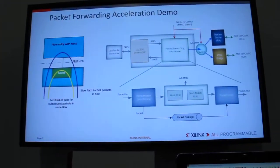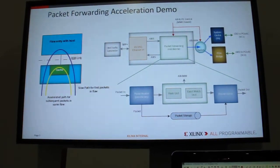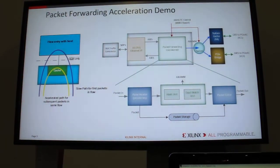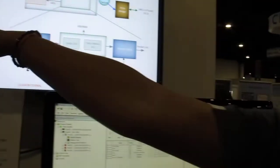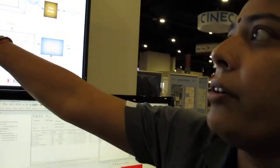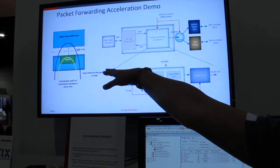In this particular demo, what we are demonstrating is packet forwarding — basically an L2 switching application acceleration using CCIX. If you see the diagram here, we basically have our forwarding rules for L2 switching which are residing with the host, and we have the hardware match cached on the FPGA using CCIX.